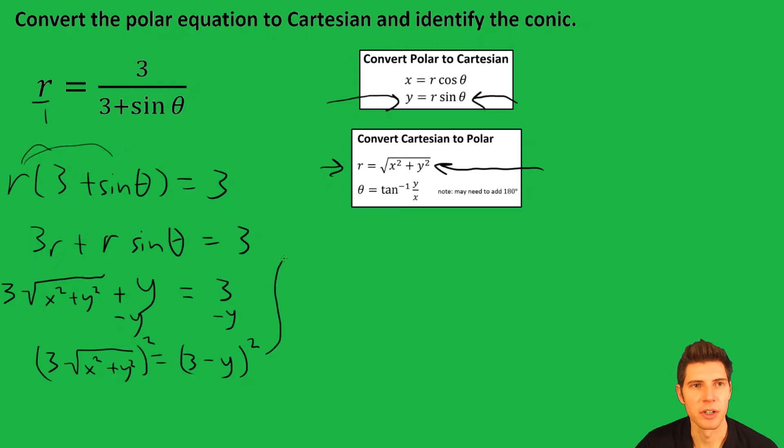So the left-hand side becomes 9 times x squared plus y squared. You just square both of them: square the 3 to get 9 and then the square root goes away. For the other one, this can be multiplied out. It's 9 minus 6y plus y squared. What I did was 3 minus y times 3 minus y. I did first, outer, inner, and last.